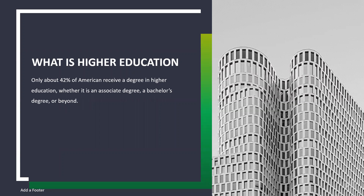What is higher education? Only about 42% of Americans receive a degree in higher education, whether it's an associate's degree, a bachelor's degree, or beyond. The definition of higher education is any of various types of education given in post-secondary institutions of learning, and usually affording at the end of a course a named degree, diploma, or certificate of higher studies.